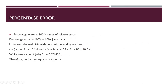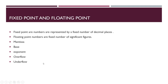Here is an example you can see on screen. Fixed point numbers are represented by a fixed number of decimal places; floating point numbers use a fixed number of significant figures. Related terms include: base, exponent, overflow, and underflow. Overflow occurs when the result of an equation is too large, and underflow occurs when it is too small.